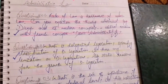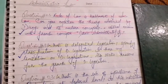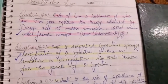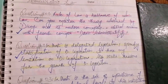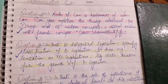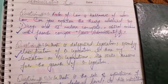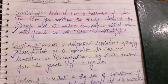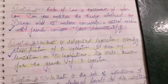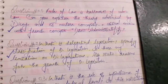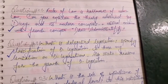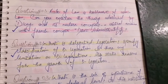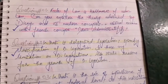Question number one: Rule of law is the hallmark of administrative law. Can you explain the theory advanced by Dicey and its modern concepts? Plus, critically examine with the French concept of Droit Administratif. You first have to explain rule of law as a hallmark of administrative law, then explain the theory advanced by Dicey and its modern concepts, plus provide criticism with the French concept of Droit Administratif.